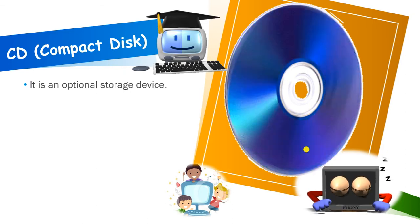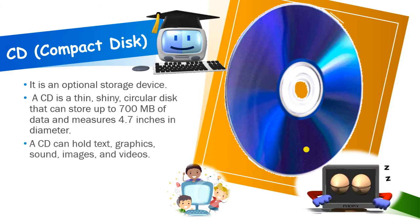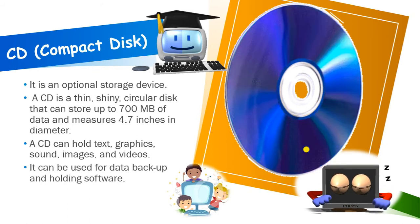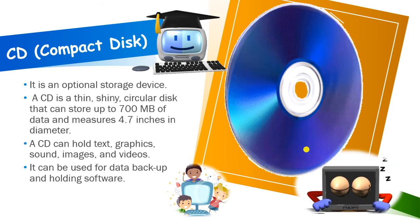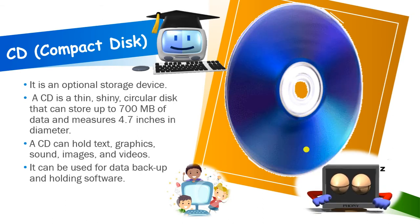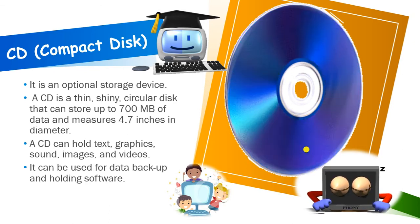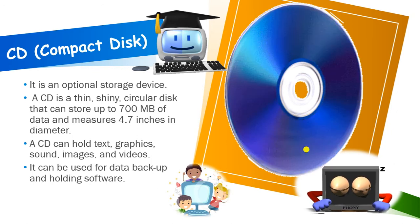Next is CD — Compact Disk. It is an optional storage device and the full form is Compact Disk. A CD is a thin, shiny, circular disk and it can store up to 700 MB of data. It is 4.7 inches in diameter. A CD can hold text, graphics, sound, images, videos — anything can be stored in a CD. It can be used for data backup and holding software. Backup means whenever you delete any file by mistake, it should be stored somewhere — that is called backup.